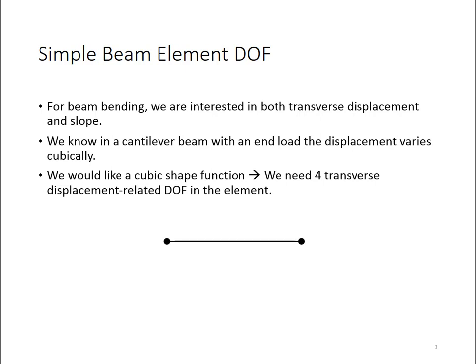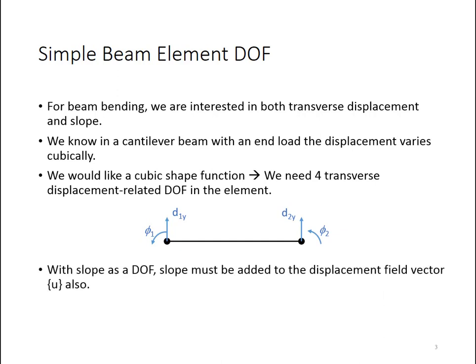That's what we're going to do for the beam element, because slope is important here. So this is my beam element, looks very similar to the bar element. I'm going to choose two transverse displacements, D1y and D2y. But in addition, to get the total of four degrees of freedom, so that I can have a cubic transverse displacement function, I'm going to add slope at node 1 and slope at node 2. Note that the direction of these is the positive slope direction, and that's going to be associated with a positive bending moment. Because we're adding slope as a degree of freedom, we're going to have to go back to the displacement field vector and redefine that so that it includes slope change as an additional displacement term.